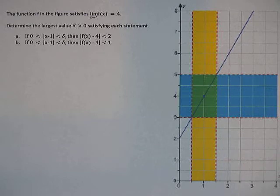We're asked to find the largest value of delta greater than 0 that satisfies each statement. So for letter A it says if 0 is less than the absolute value of x minus 1 is less than delta, then the absolute value of f of x minus 4 is less than 2.